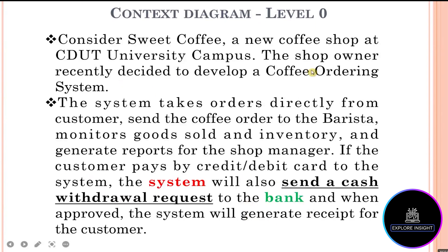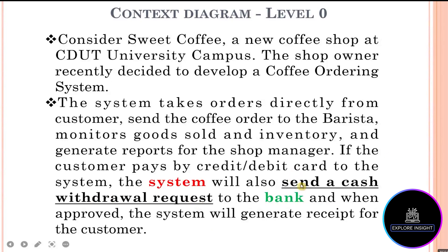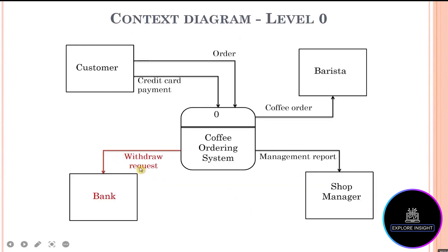Going next: the system will also send a cash withdrawal request to the bank. Since we don't have any entity for bank yet, we go ahead to create a new external entity and name it bank. For the data flow, it says 'send a cash withdrawal request' — we shorten this by removing the verb, giving us 'withdrawal request' flowing from the coffee ordering system to the bank.